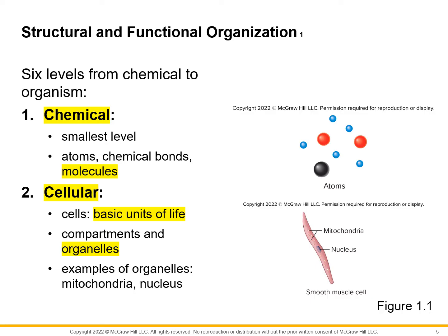Let's now talk about structural and functional organization, starting from the smallest units until we form an entire human organism. First is the chemical level — the smallest level of organization. Here we observe atoms, chemical bonds, elements like carbon, oxygen, and hydrogen, and the molecules formed when those atoms bond together. We'll discuss this more in the next chapter on basic biochemistry.